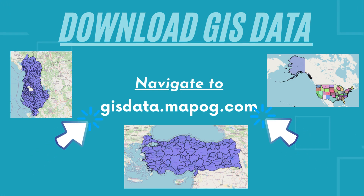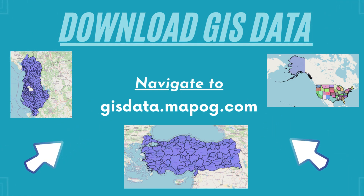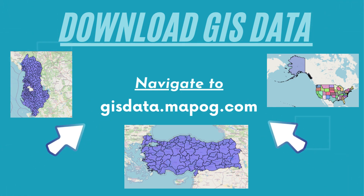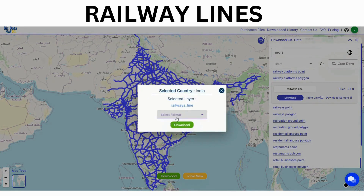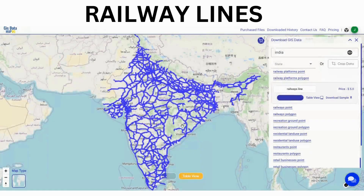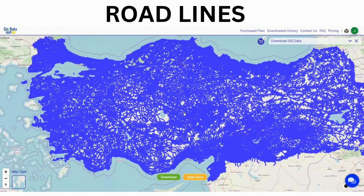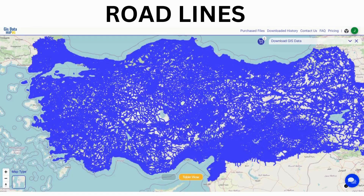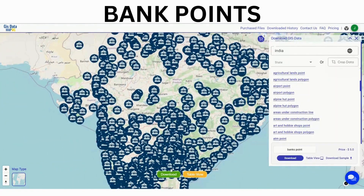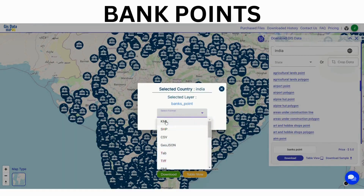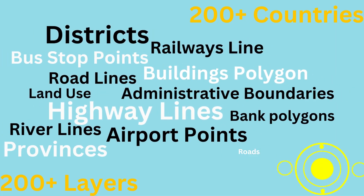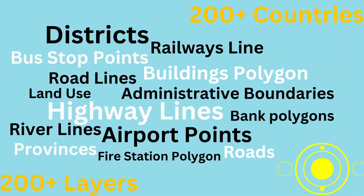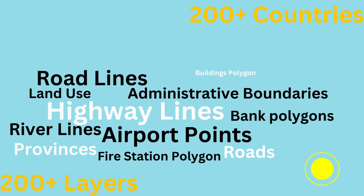Once you are navigated to gisdata.mapoji.com, you have access to download a vast range of data including railway lines, road lines, pin codes, boundary polygons, and more — with 200 plus types of data available for 200 plus countries.